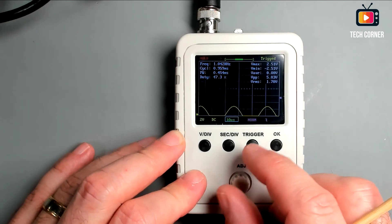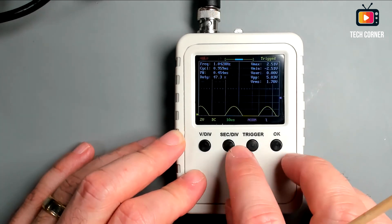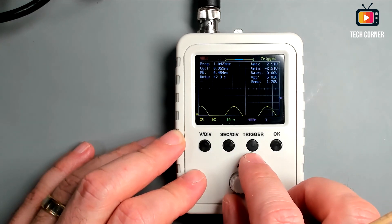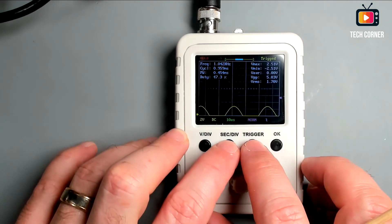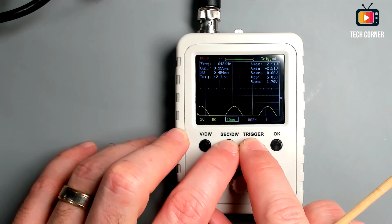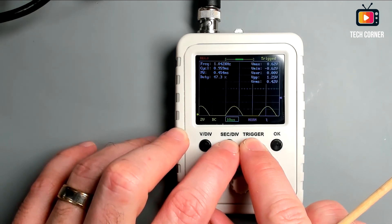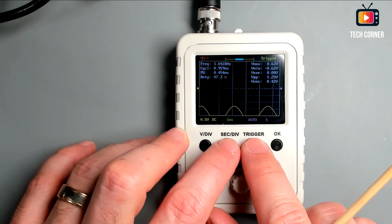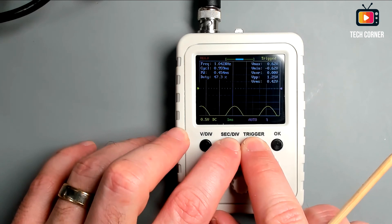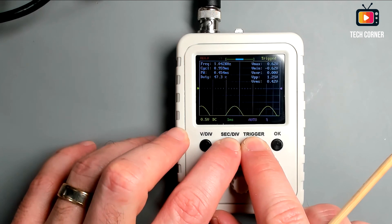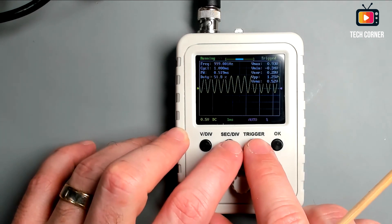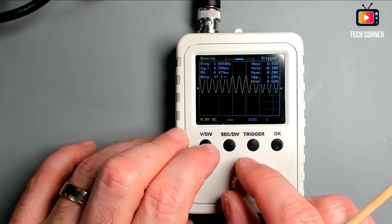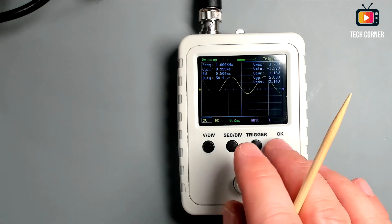And in this oscilloscope, you have something similar. Pressing the sec div and trigger together. So we press both of the buttons and it should reset the signal to the default. You see the arrows right now are reset. The signal is on the zero.